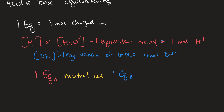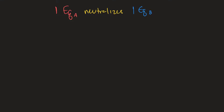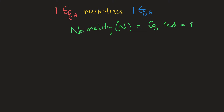Because this is so useful, chemists typically express acid-base concentrations in what we call normality. Normality is equal to the equivalents of an acid or base over liters of solution. This is a little different from molarity — where molarity is moles of a substance divided by liters of solution — because normality specifically looks at moles of hydroxide or hydronium over liters of solution.